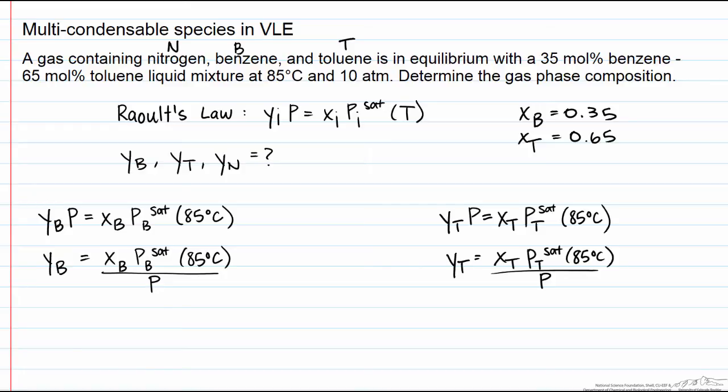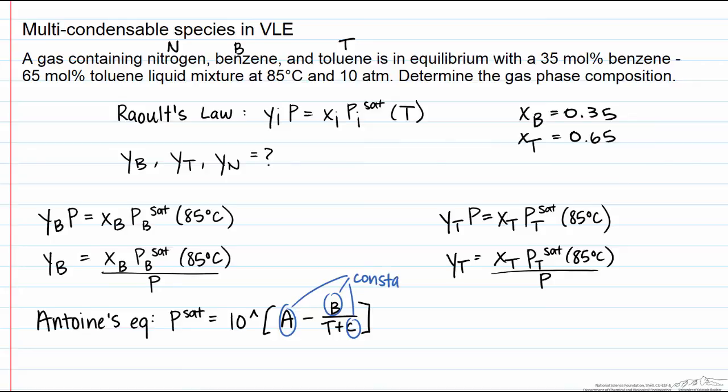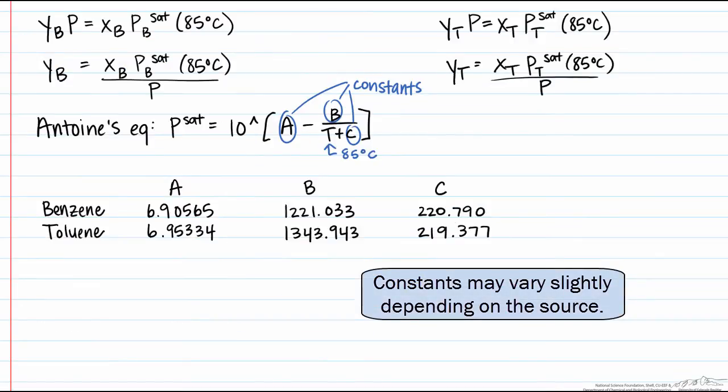we can solve for the saturation pressures right away using Antoine's equations. Antoine's equation says that p sat equals 10 raised to the a minus b over t plus c, where a, b, and c are constants that are associated with the component, and t is the temperature in degrees Celsius. Let's list our constants for benzene and toluene.